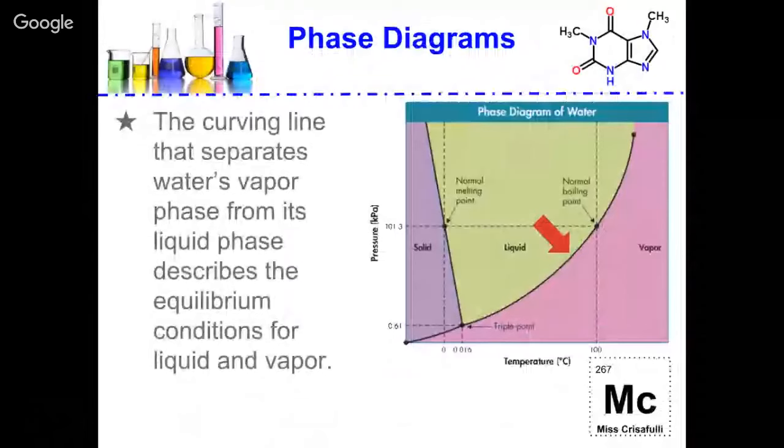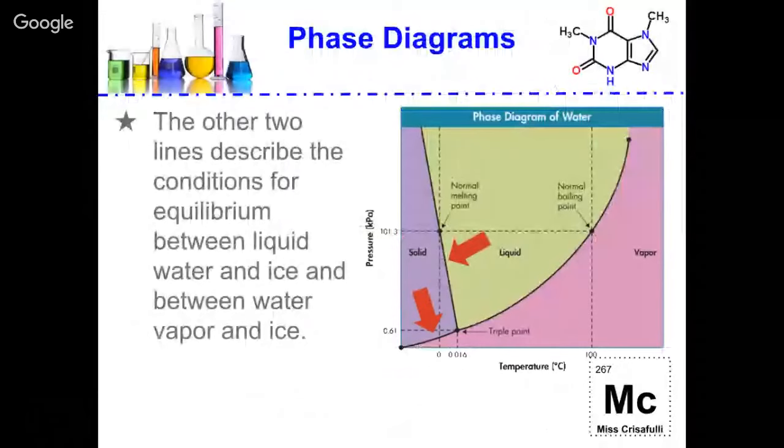The curved line that separates water vapor phase from its liquid phase describes the equilibrium conditions for liquid and vapor. The other two lines describe conditions for equilibrium between liquid water and ice, and between water vapor and ice.